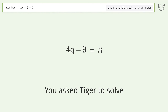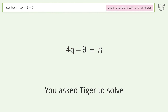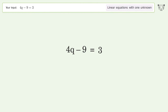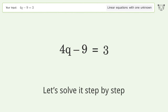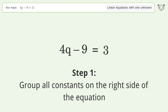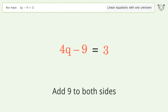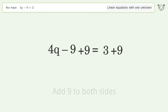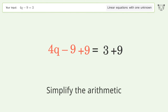Tiger is asked to solve a linear equation with one unknown, and the final result is q equals 3. To solve it step by step, group all constants on the right side of the equation by adding 9 to both sides, then simplify the arithmetic.